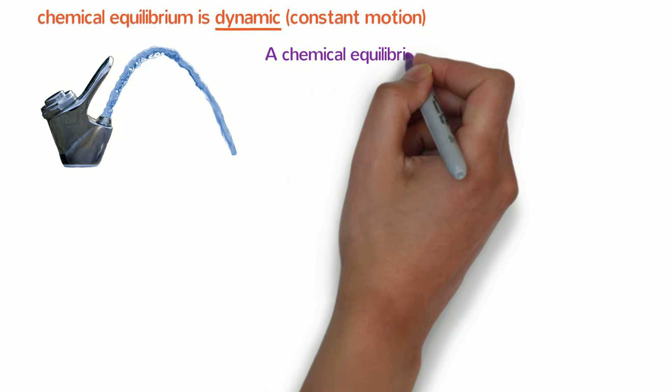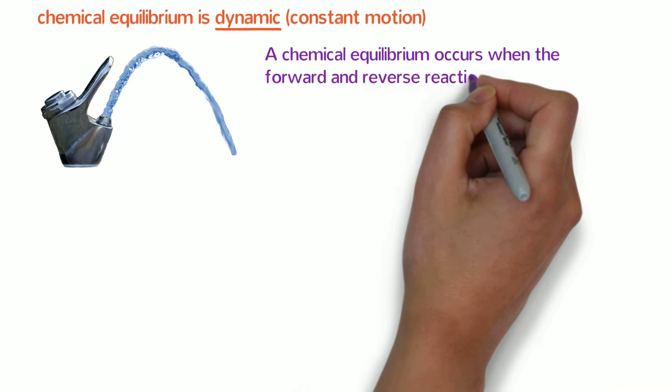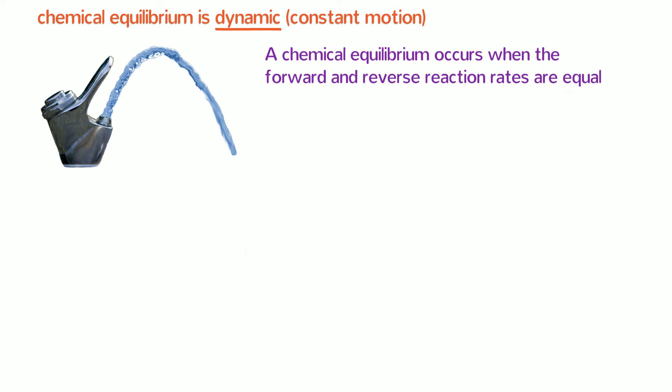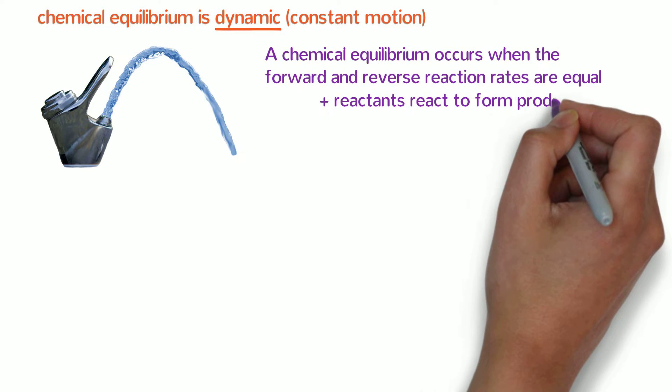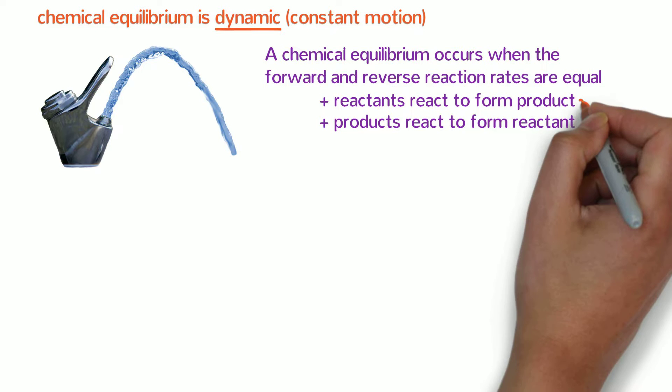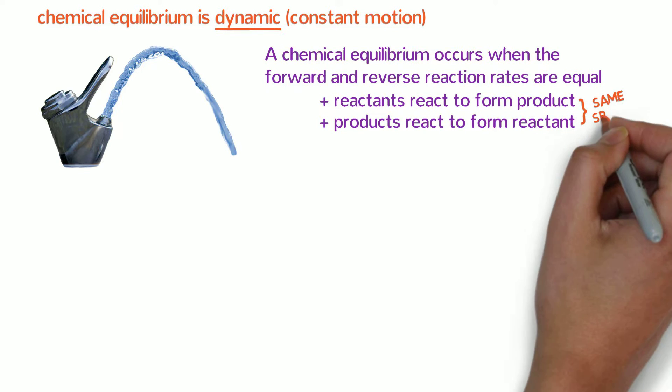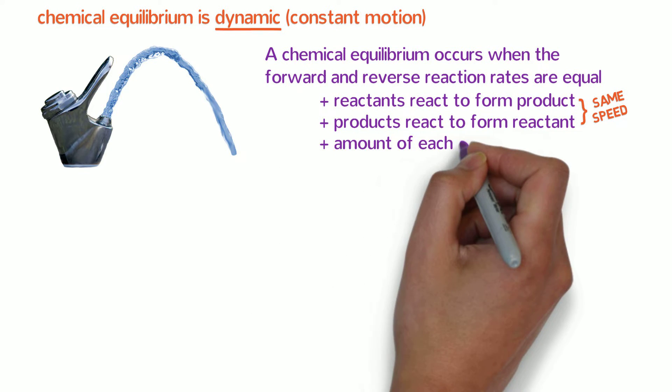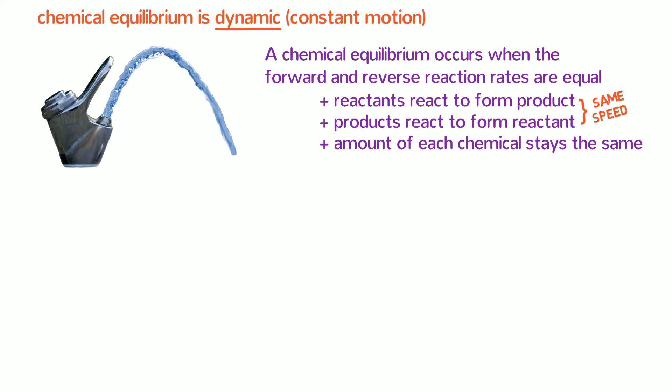A chemical equilibrium occurs when the forward and reverse reaction rates are equal. That is, reactants constantly react to form product, and products constantly react to form reactant. And the two things happen with the same speed so that the amount of each chemical stays the same.